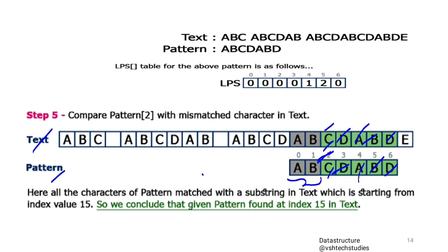The pattern string is present in the text string. To find the position: counting indices in the text string from index 0, the match is found at index position 15 in the text string. So the first answer is yes, the pattern string is found in the text string, and the second answer is that it is found at index position 15.